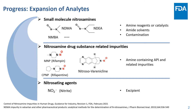These nitrosamines have been well studied in areas such as the food industry and environmental science, and experience and knowledge from these areas greatly facilitated method development in pharmaceuticals. Later, it became clear that nitrosamine impurities were not limited to simple ones. Amine-containing APIs or their related impurities can also form nitrosamines, thereby causing safety and quality concerns.